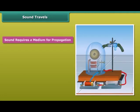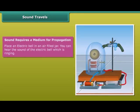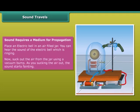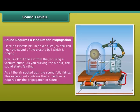Sound requires a medium for propagation. Place an electric bell in an air-filled jar. You can hear the sound of the electric bell ringing. Now suck out the air from the jar using a vacuum pump. As you suck the air out, the sound starts fading. As all the air is sucked out, the sound fully fades. This experiment confirms that a medium is required for the propagation of sound.